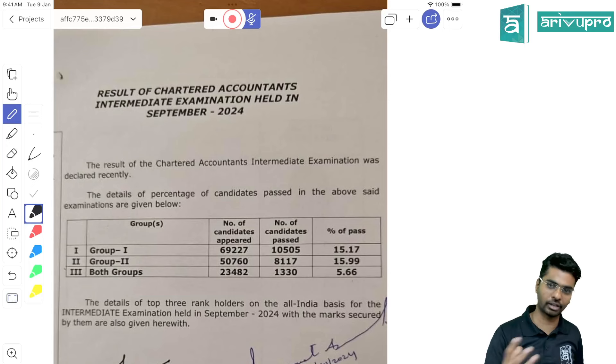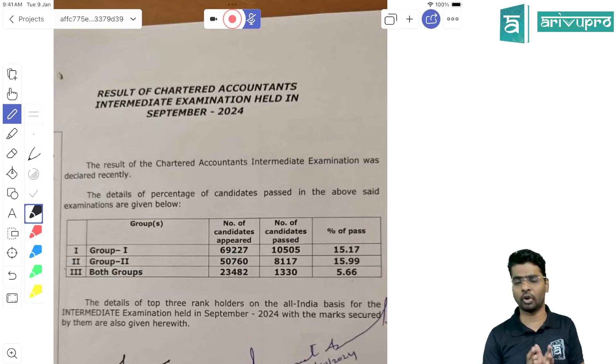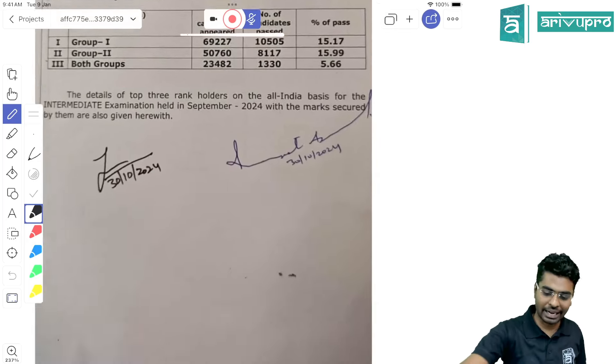For ones who have not cleared both modules, I suggest you take one module at a time. For ones who cleared one module, congratulations. For ones preparing for the second module or looking to write the module they failed again, you have 60 days from today.